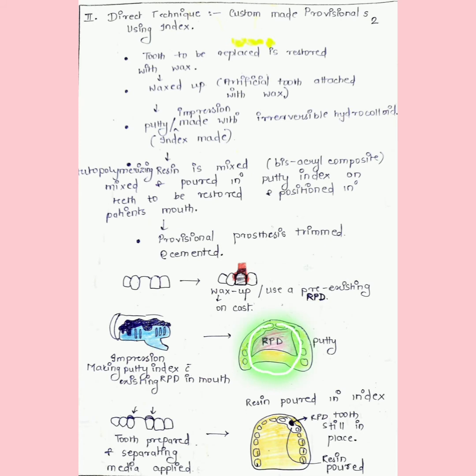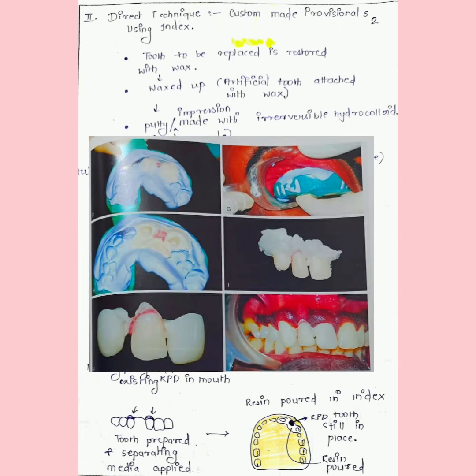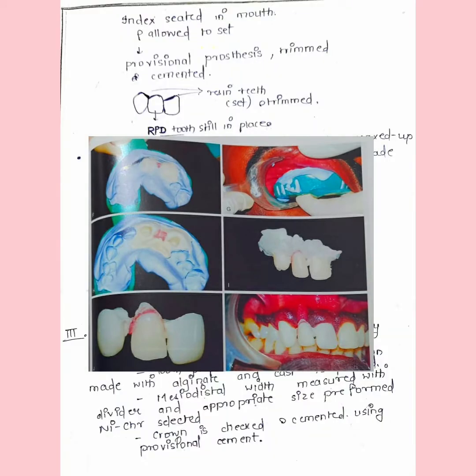The adjacent teeth are prepared which are the abutments, then separating media is applied. We take this putty with the RPD tooth still in place. We remove the denture but still have that RPD tooth in. We pour the resin. This index with the resin inside is seated in the mouth and allowed to set. We get a provisional prosthesis which is trimmed and cemented. You see the RPD tooth is still in place whereas the adjacent abutment teeth are the resin teeth that have been set and trimmed.